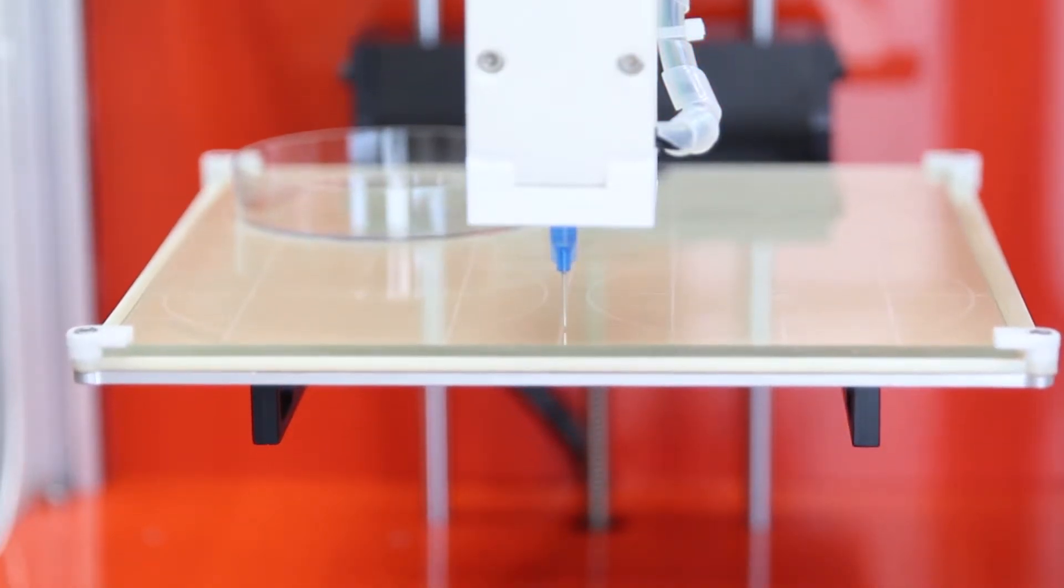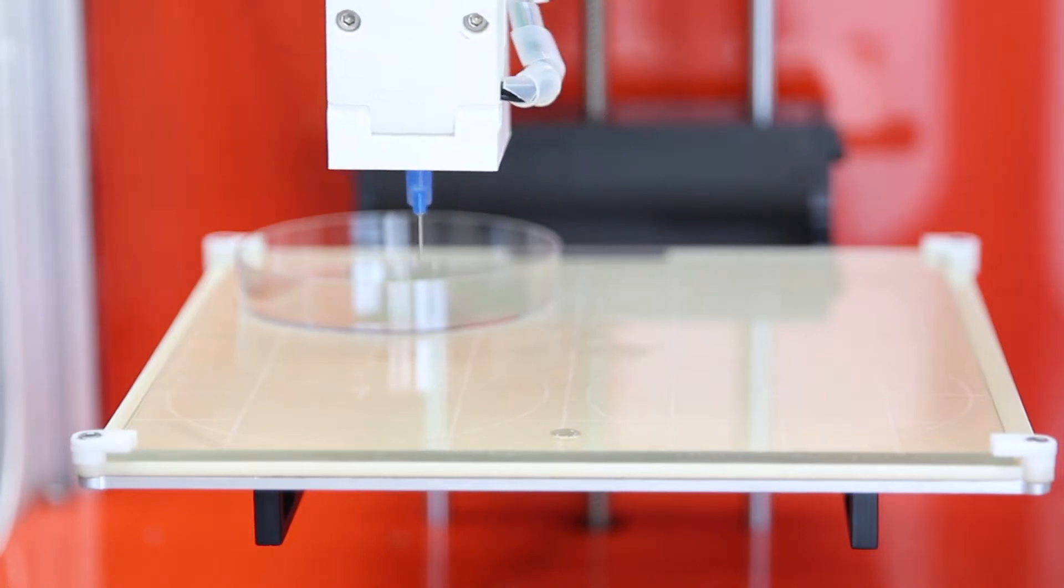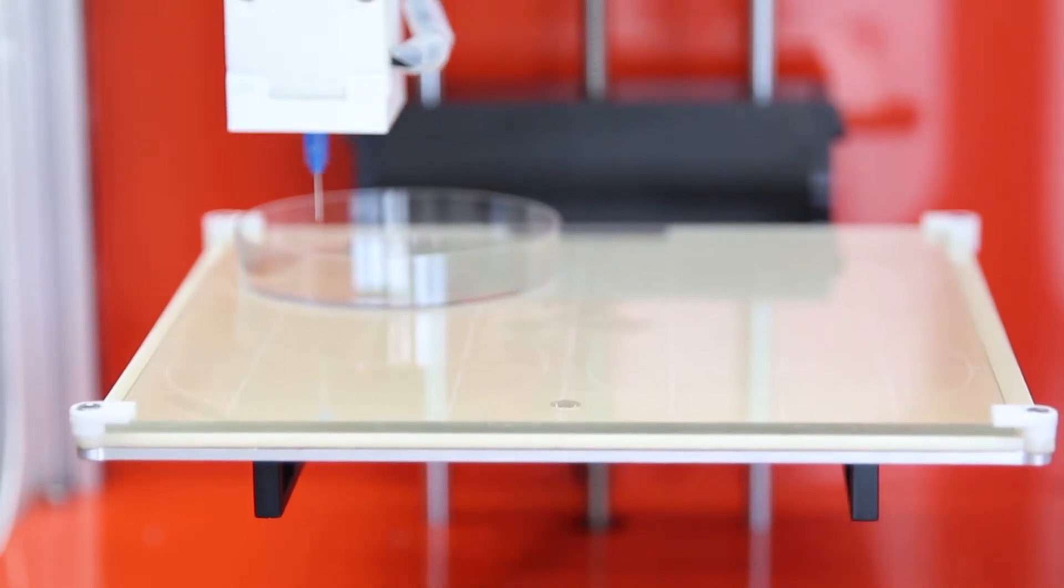The print will start with a priming step to ensure you will extract any air bubbles from the syringe, and will then proceed to print a 3x3 array.